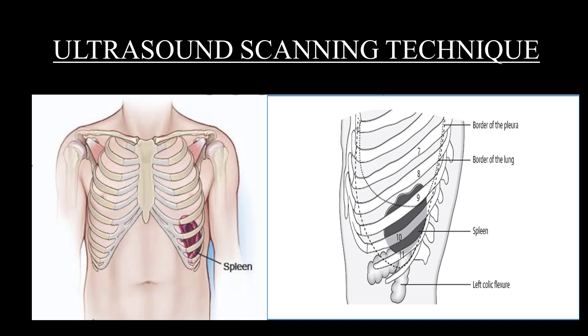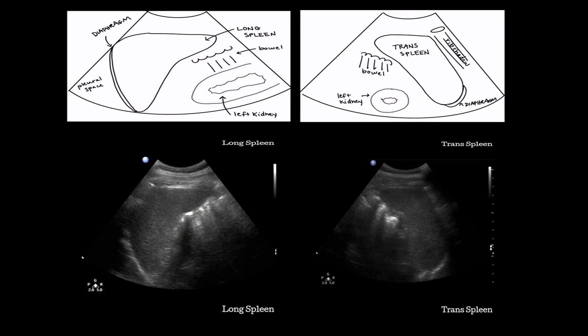In some patients with narrow intercostal spaces, intercostal scanning can be difficult. A transverse plane from a lateral intercostal approach may help to localize a lesion anteriorly or posteriorly within the spleen. While scanning, it's important to note the adjacent structures. On the longitudinal scan, the diaphragm is represented by the echogenic line, along with the pleural space, a part of the bowel loop, and part of the left kidney.